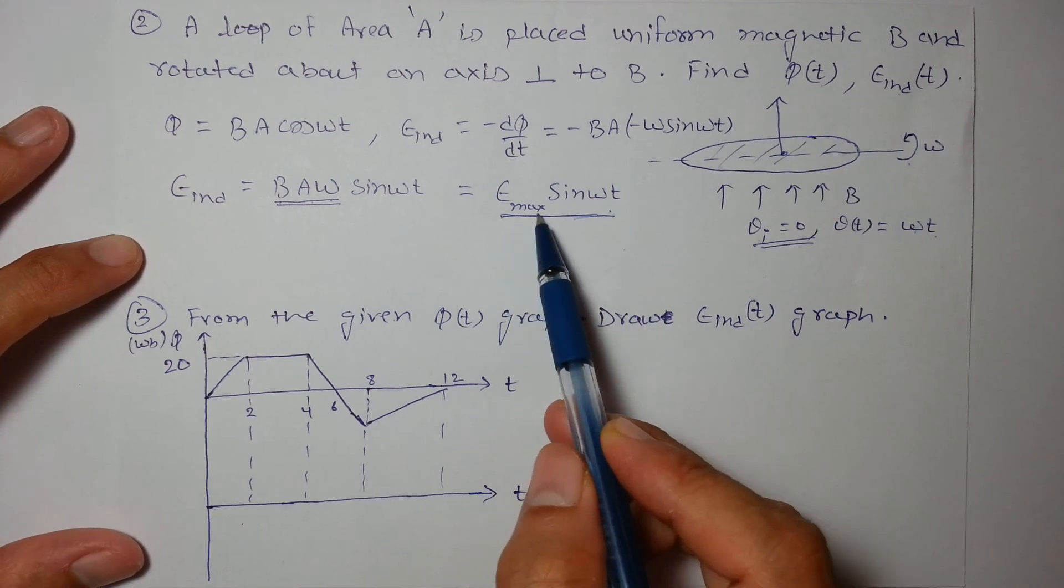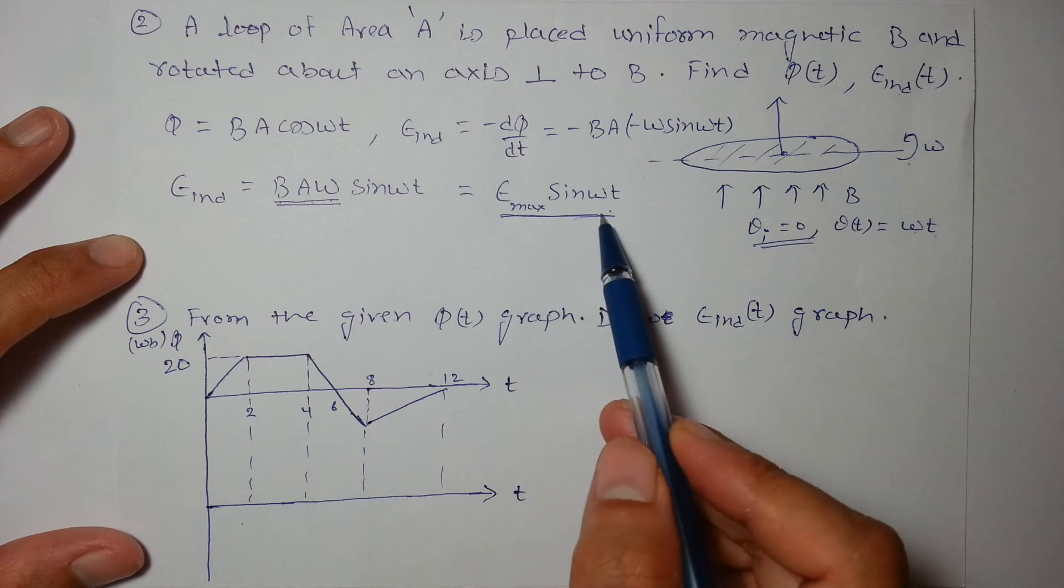And in all the cases we are rotating this coil. That is the reason we get a household supply like this which is an AC.